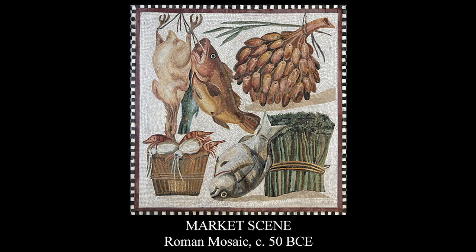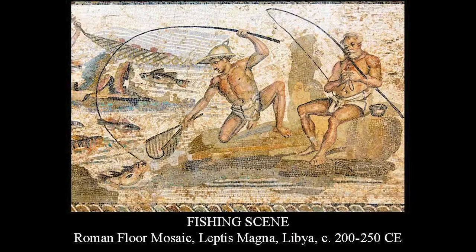This is a Roman mosaic dating from about 50 BC, and it shows a market scene. There is no message here, there is no mythology, there is no encouragement to do anything. It is purely a realistic scene of a market with fish and chicken and some vegetables. There is a lot of this type of art in Roman history, with wall paintings that have not come down to us because they've been destroyed. What we do have, like this piece, is a floor mosaic, and floor mosaics survive a lot better than the wall paintings.